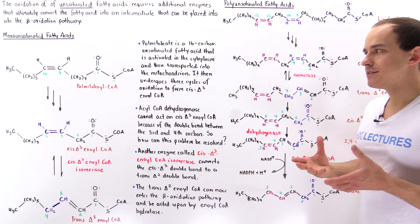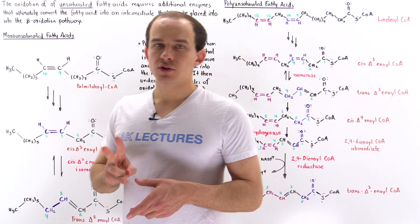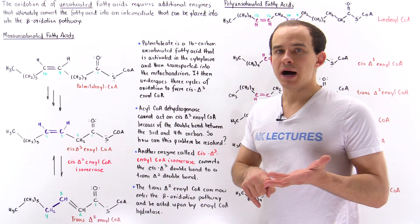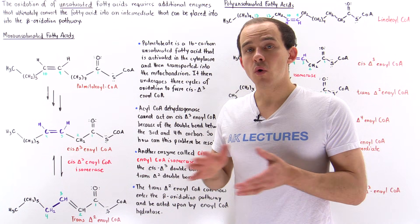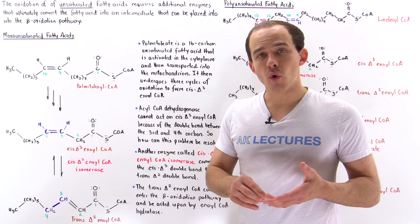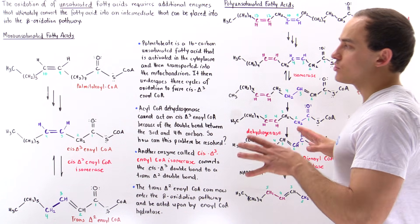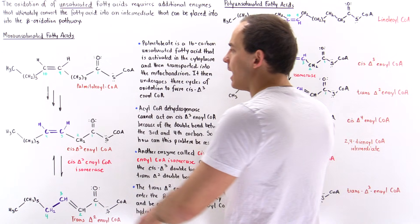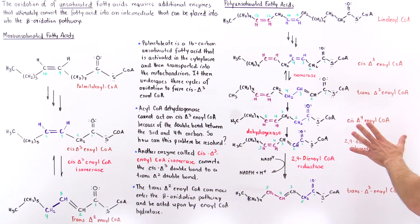Fatty acids with double bonds can be broken down into one of two categories. They can either contain an odd number of double bonds — so 1, 3, 5, 7, 9, and so forth — or they can contain an even number of double bonds — so 2, 4, 6, 8, and so forth. In this lecture, we're going to look at two different cases: we'll begin by focusing on the odd case, and then we'll focus on the even case.